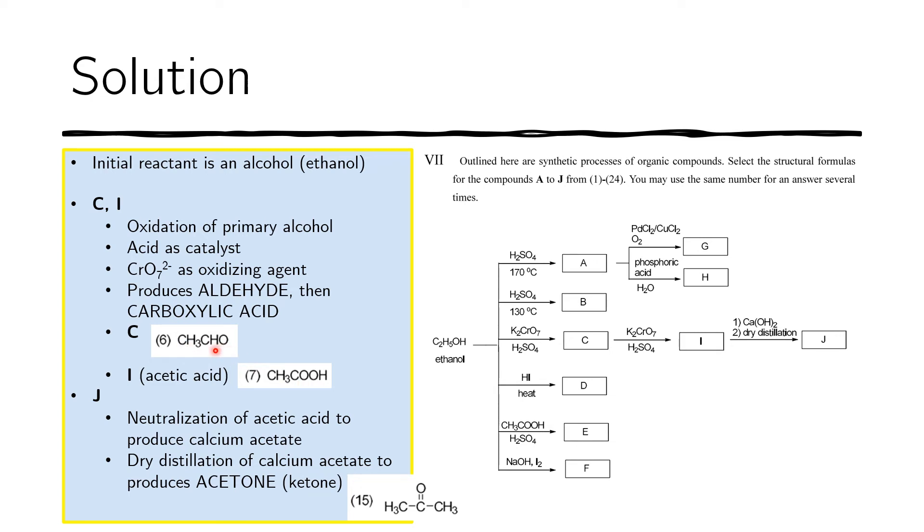And now after this, at I, we have the acetic acid. If we add calcium hydroxide, acetic acid is an acid, calcium hydroxide is a base. Therefore, we have a neutralization reaction. This will produce calcium acetate. And if you dry distill the calcium acetate, it will actually leave a ketone, acetone. And this is acetone. So acetic acid actually becomes acetone. And again, this is just something that you just have to remember. There's no way of deriving this from the facts here.